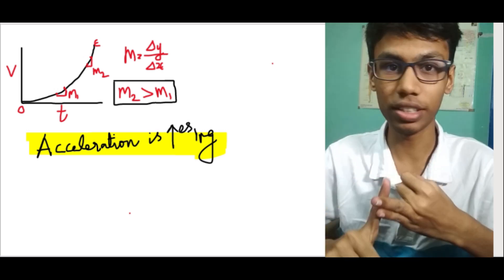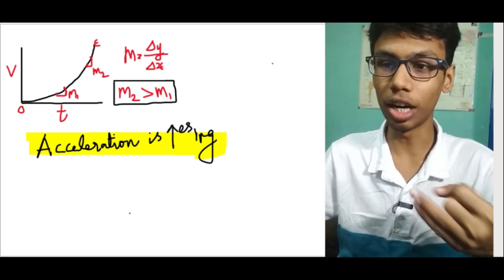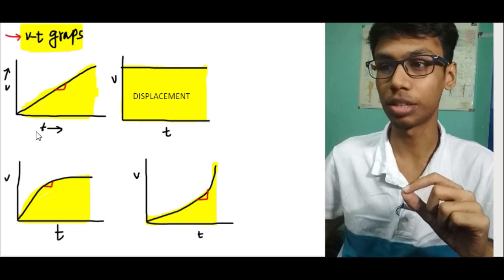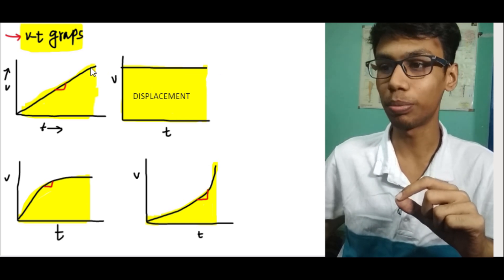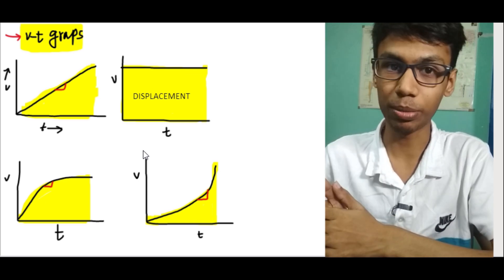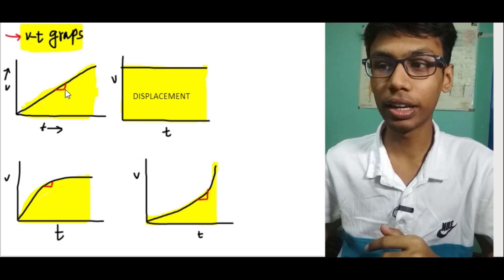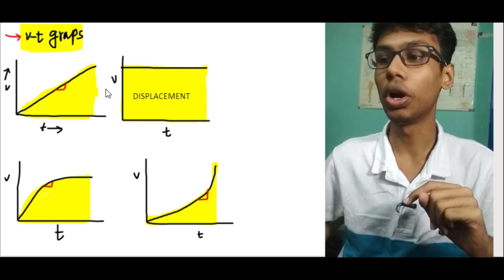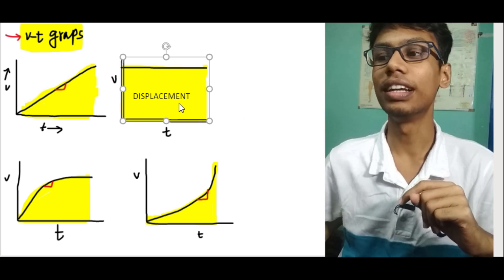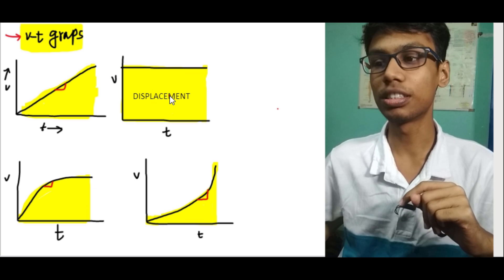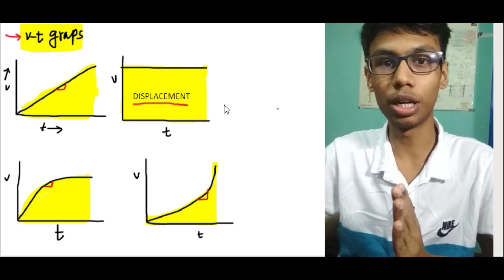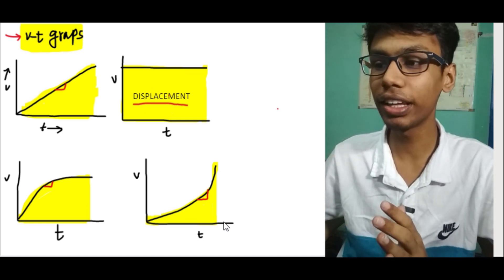So if you look at the displacement-time graph and the velocity-time graph — straight line, straight line parallel to x-axis, passing through origin, parabolic OD, and OE — the slope of the displacement-time graph is velocity, and the slope of the velocity-time graph is acceleration.